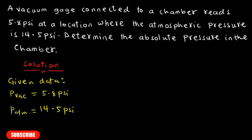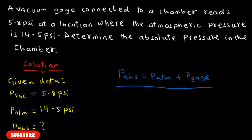We have been asked to find the absolute pressure. The relation between absolute pressure, atmospheric pressure, and gauge pressure gives us: absolute pressure equals atmospheric pressure plus gauge pressure.